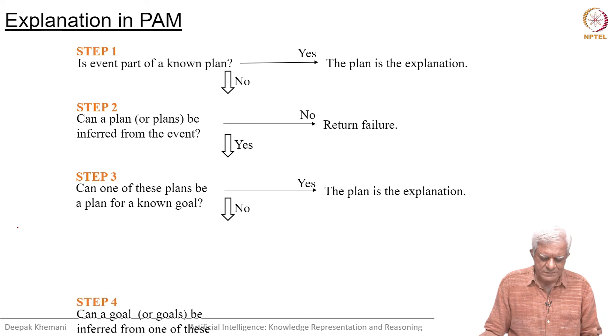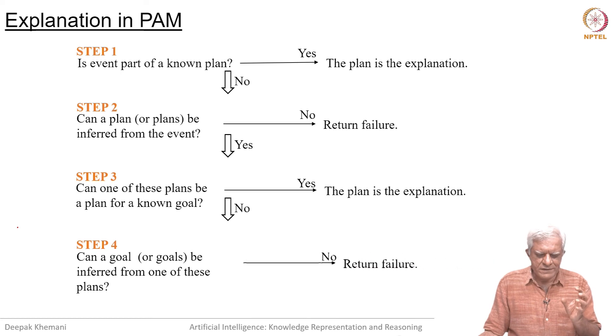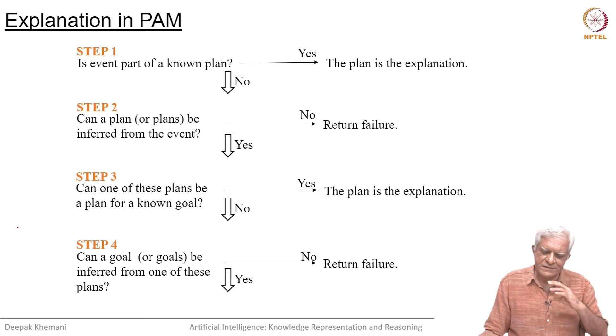Else, can a goal be inferred from one of these plans? You are looking at an event or an action. And if it is not matching an expectation, then you are inferring a plan and seeing whether that matches an expectation. If that does not match, then you infer a goal and see if that matches the expectation. And then you can go to the sub goal sub plan relationship as well.